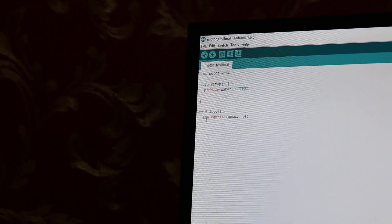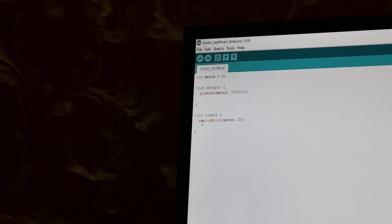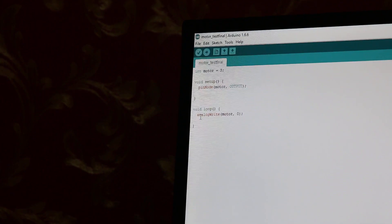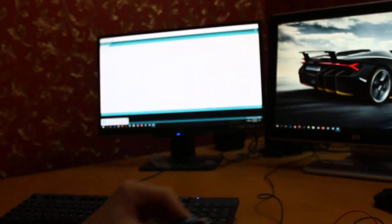And in the loop, all we have to do is analog write, because it's an analog pin. The motor, comma, and the speed that we want. So right now it's at zero. So it's not going to be working right now. So now let's connect the Arduino via the USB cable and upload the program.